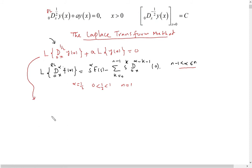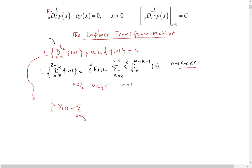From the formula, it becomes s^(1/2) times capital Y(s), where Y(s) is the Laplace transform of y(x), minus the summation from k=0 to n-1. Since n is one, n minus one is zero, so the summation runs only at the single point k=0. So we have s^k times the fractional derivative of order alpha minus k minus 1 at zero, plus a times Y(s) equals zero.